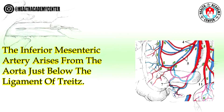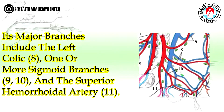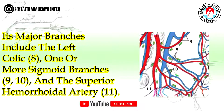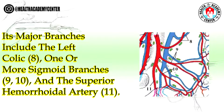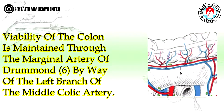The inferior mesenteric artery arises from the aorta just below the ligament of Treitz. Its major branches include the left colic (8), one or more sigmoid branches (9, 10), and the superior hemorrhoidal artery (11). Following ligation of the inferior mesenteric artery, viability of the colon is maintained through the marginal artery of Drummond (6) by way of the left branch of the middle colic artery.